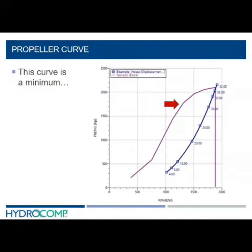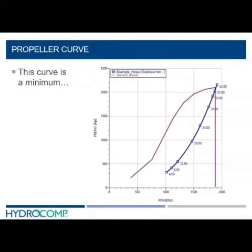I've labeled some of the speed points here, so we can see four knots, eight knots, twelve knots, all the way up to 30, 31, 32 knots. This is a real ship — a twin screw diesel powered ship, about 65 long tons — consuming around 2,100 horsepower.